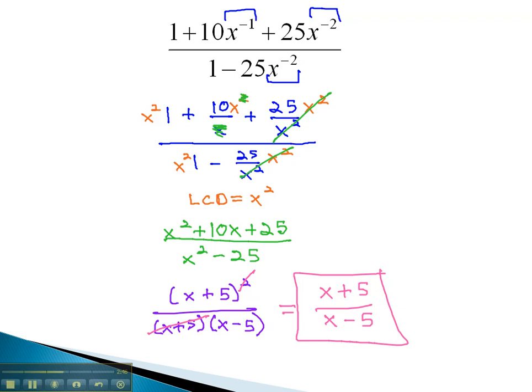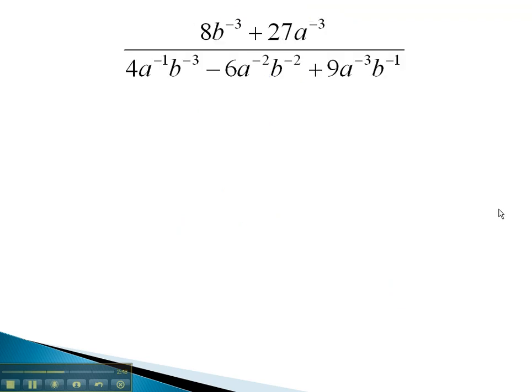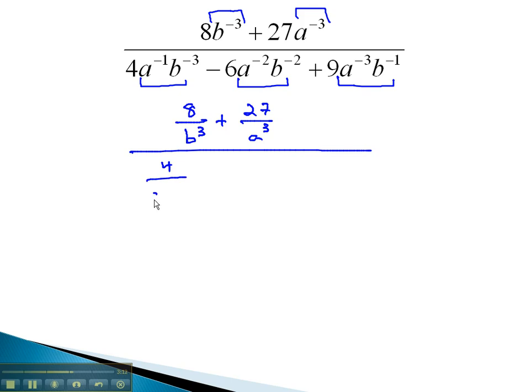Let's take a look at another example, which uses negative exponents in order to simplify. Again, in this problem, we see several parts with negative exponents. Each term will create its own little fraction. We have 8 over b cubed, plus 27 over a cubed, all over 4 over ab cubed, minus 6 over a squared b squared, plus 9 over a cubed b.